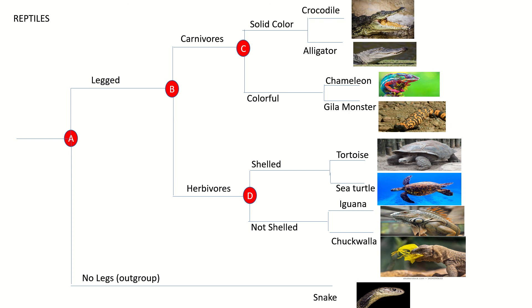In the herbivore group, we diverge at node D into shelled and non-shelled herbivores. In the shelled group, we have tortoise and sea turtle, with their only notable differences being their size and the fact that tortoises live on land while sea turtles live in the water. In the non-shelled group, we lastly have iguanas and chuckwallas, which are similar in that they are non-shelled herbivore reptiles, but they differ in their habitat and scale density.